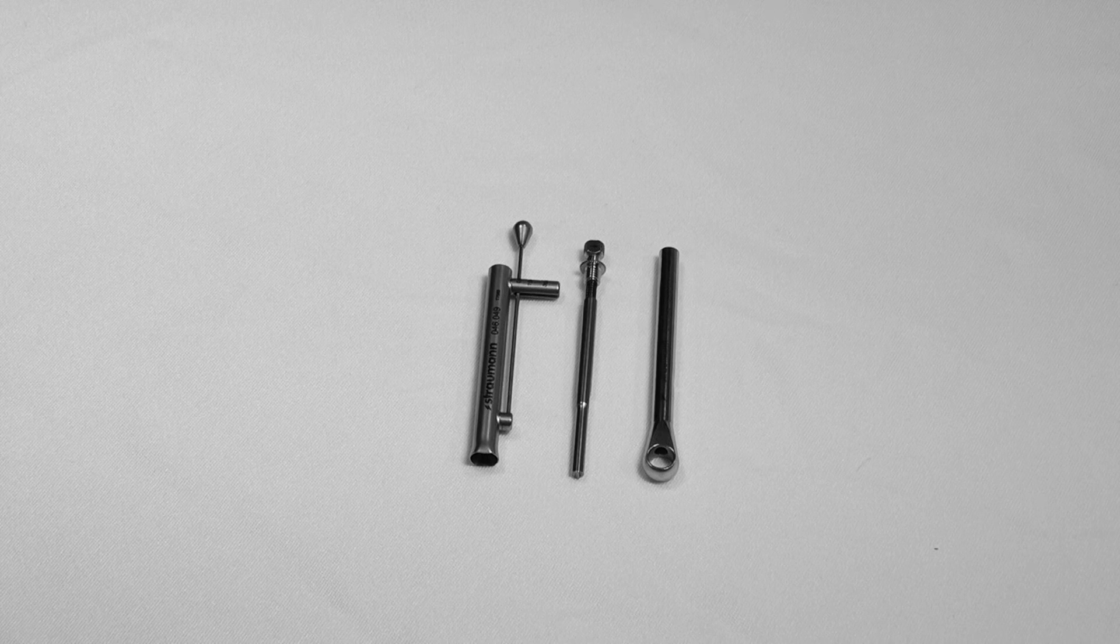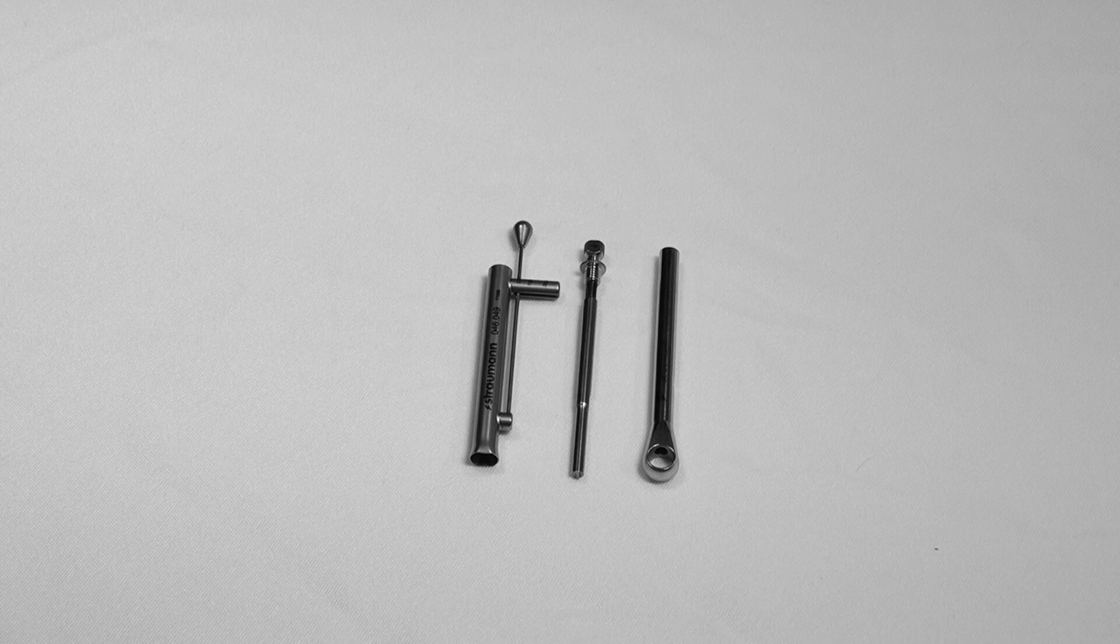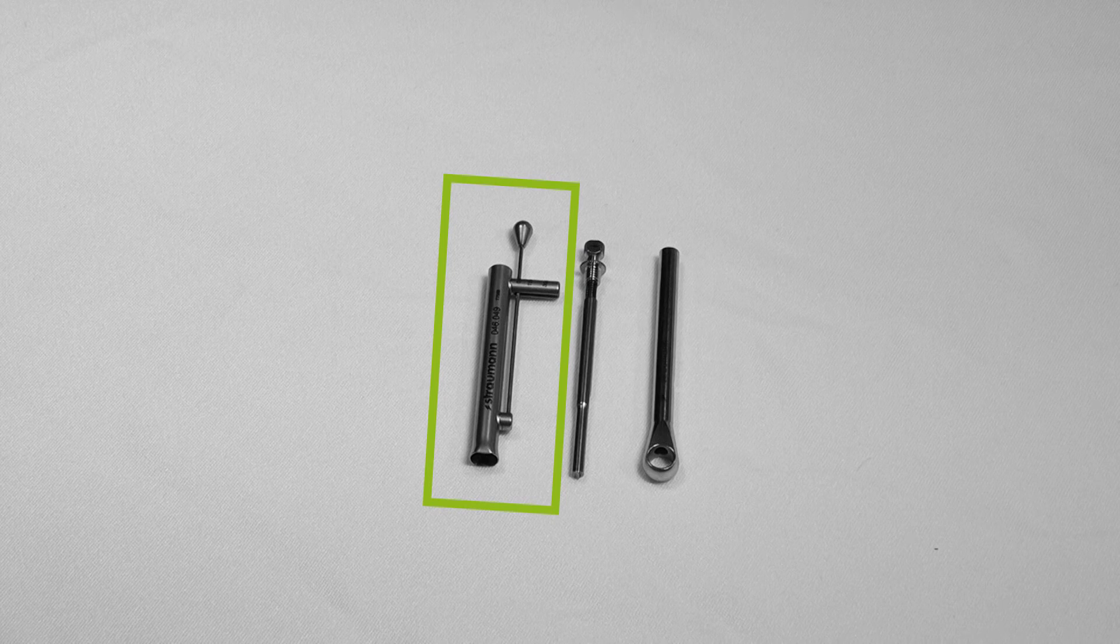The Strommen Torque Wrench is a precision instrument that is comprised of three separate components. These are the ratchet body, ratchet bolt, and the torque control device.